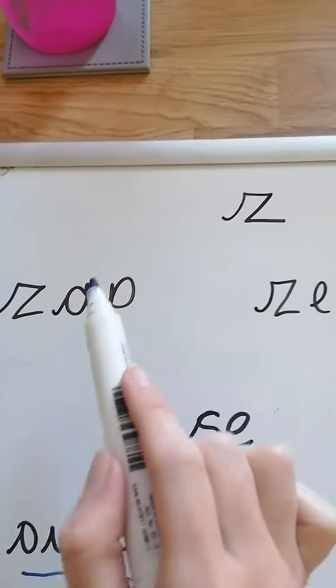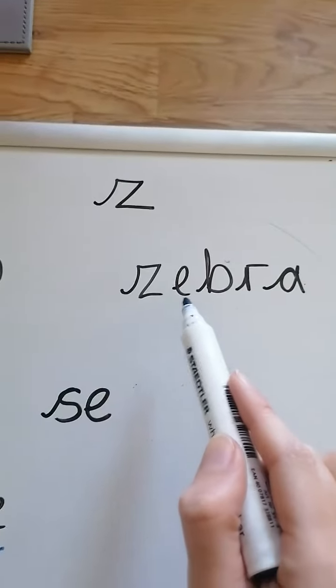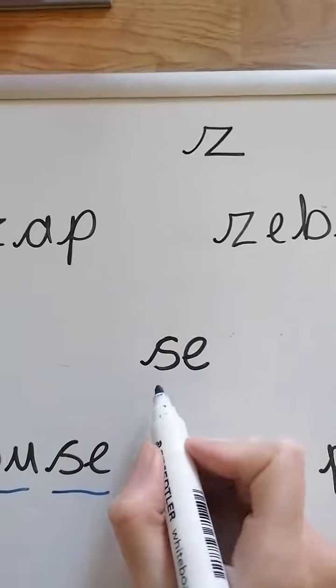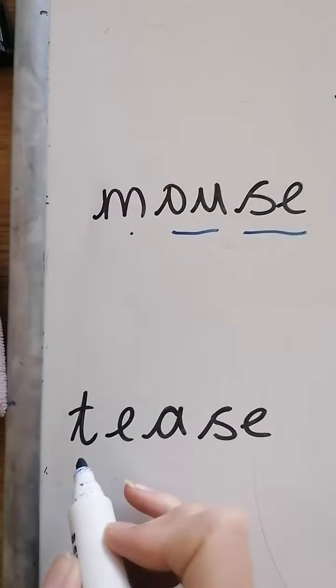So we already know 'z' like in zap and zebra, but we also write it like this. So let's read this one together.